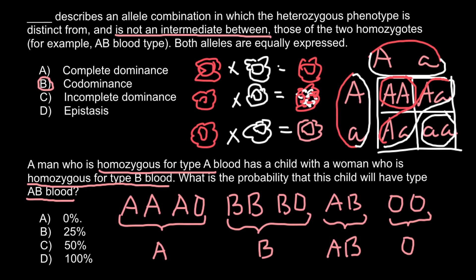If the father is homozygous for blood group A, his genotype is AA. If the mother is homozygous for blood group B, her genotype is BB. We don't even need to draw a Punnett square — such a cross would result in 100% of the progeny being blood group AB. The correct answer is D: 100%.